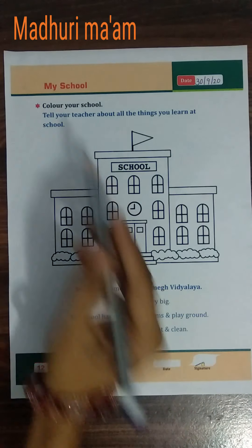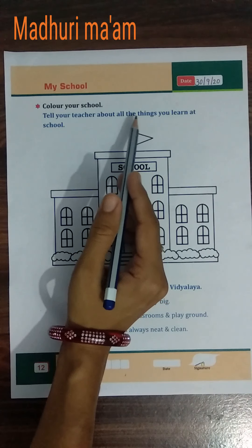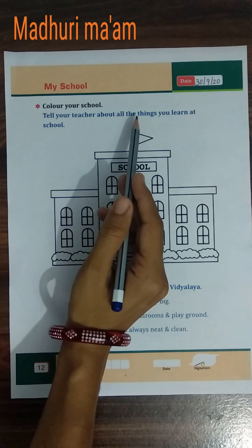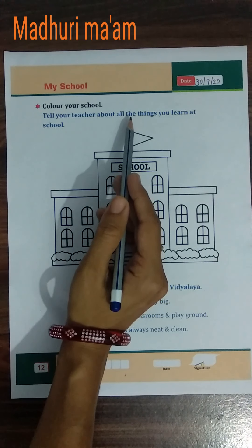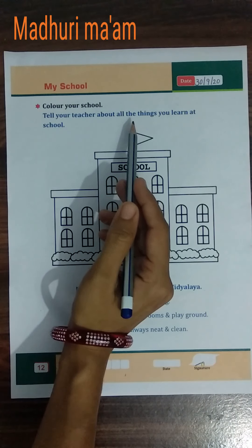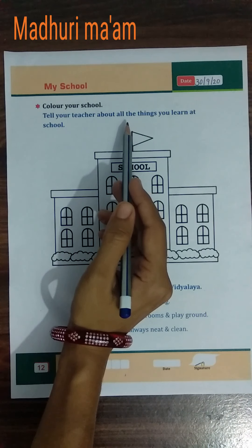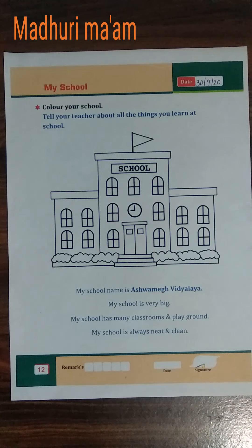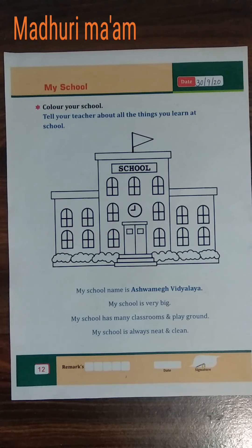First of all, everyone open your GK textbook and page number 1212. On that page we learn about My School. First write today's date: 13 September 2020.